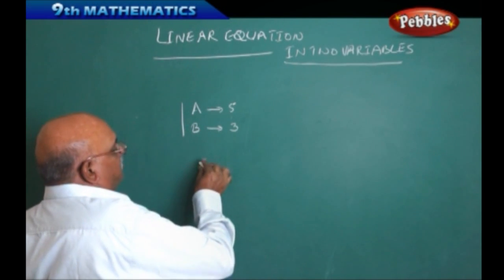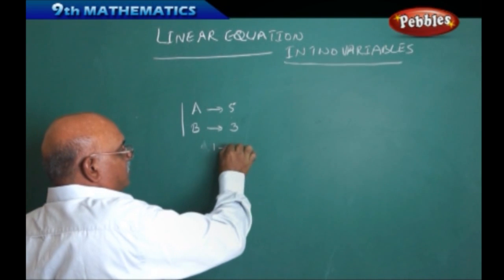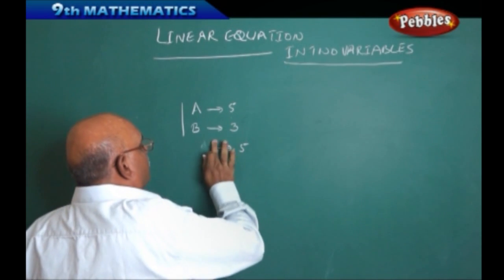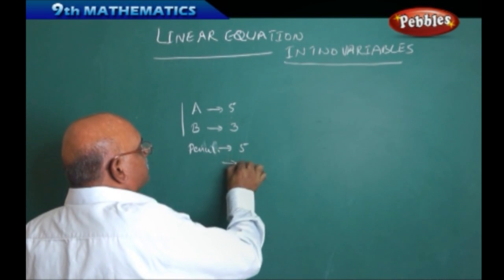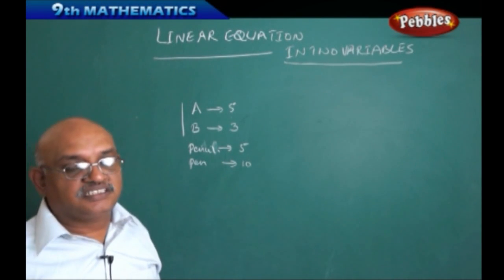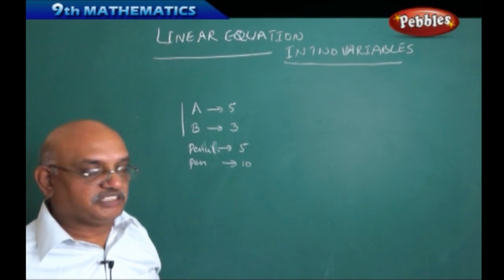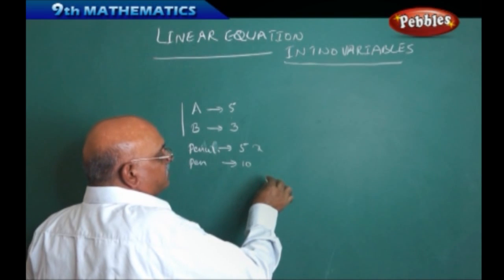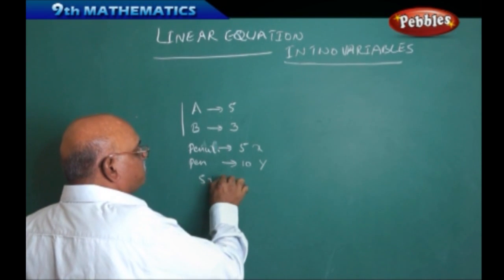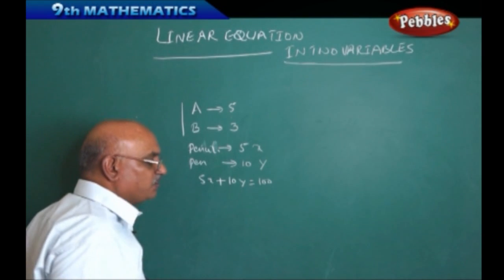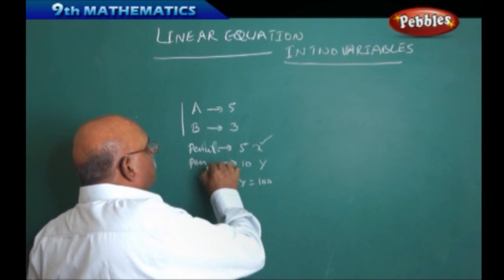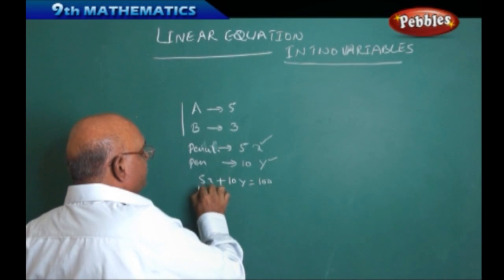Consider another application: suppose the cost of one pencil is five rupees and the cost of one pen is ten rupees. If a parent has given only 100 rupees, and we want to find out how many pens and how many pencils to purchase for 100 rupees — let x be the number of pencils and y be the number of pens — then the sum of these two costs should equal 100 rupees.